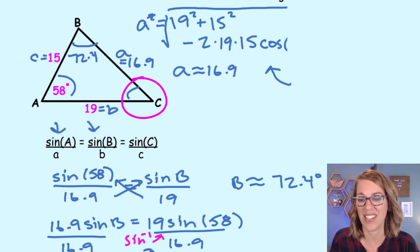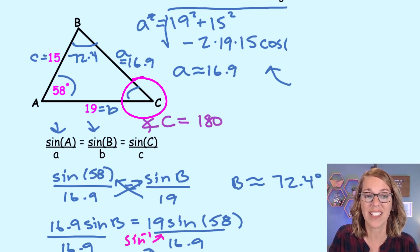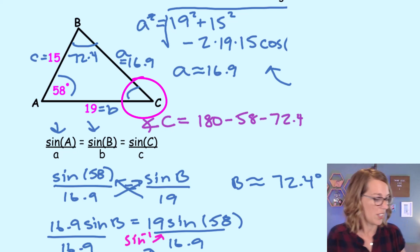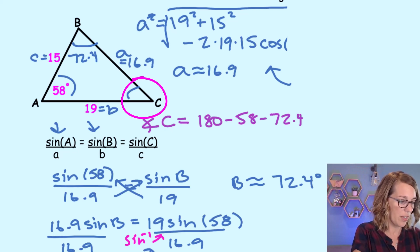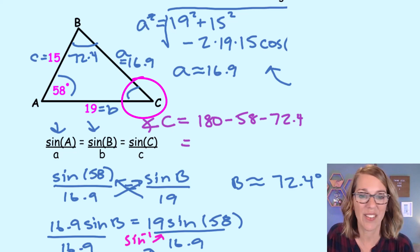And our last tool here is the fact that the sum of all of those angles is 180 degrees. Let me grab a different color pen here. We are looking for angle C. And I'll put an angle there in front. So angle C is equal to 180 degrees minus the angles that we know. So that's going to be minus 58 minus 72.4. So in my calculator, 180 minus 58 minus 72.4. And we've got that last angle. And angle C is 49.6 degrees.